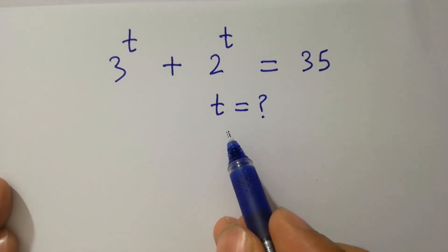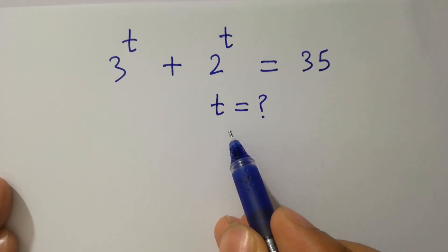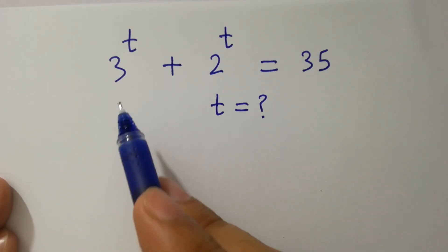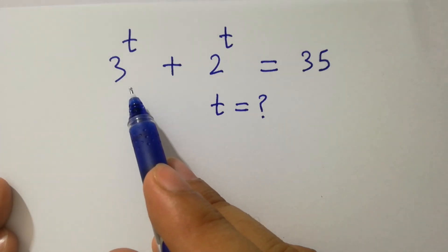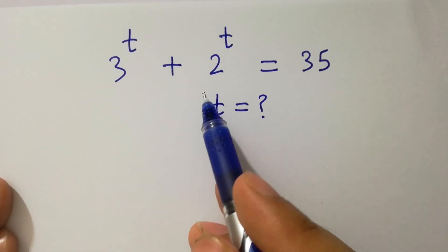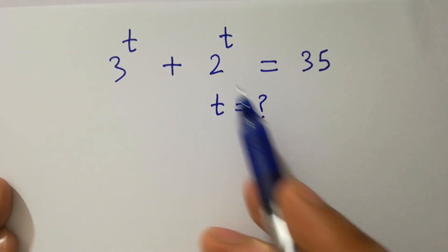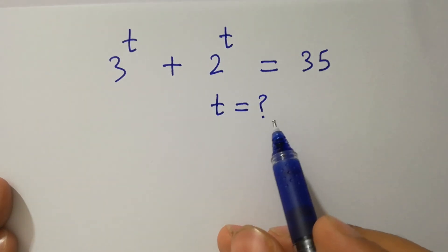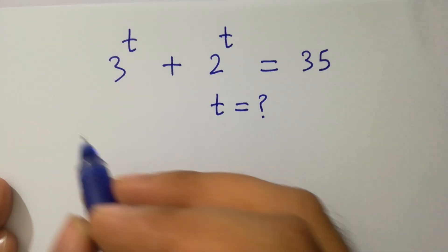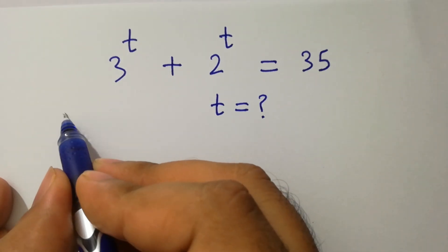Hello friends. Find the value of t if 3 to the power t plus 2 to the power t equal to 35. Let's have a solution.